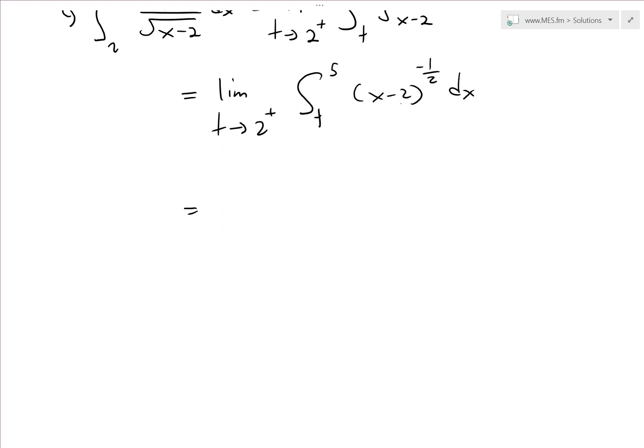This is the power function, so we have limit as t approaches 2 plus. When we evaluate, for this x minus 2, we add 1 to the exponent.